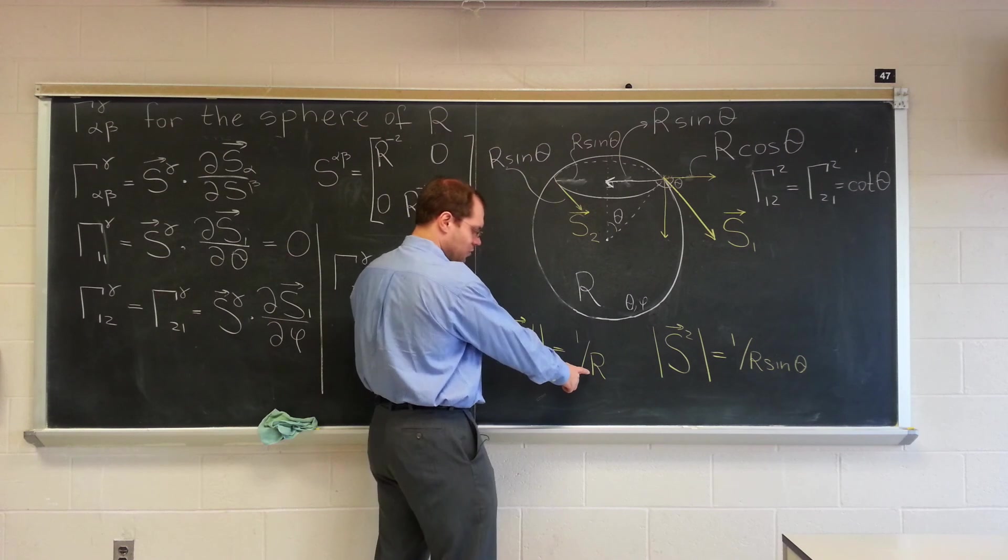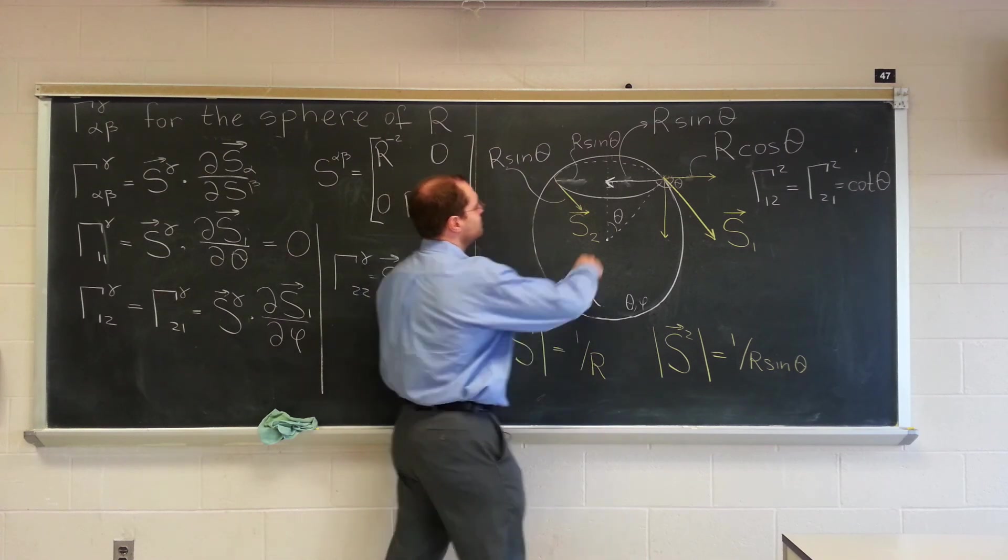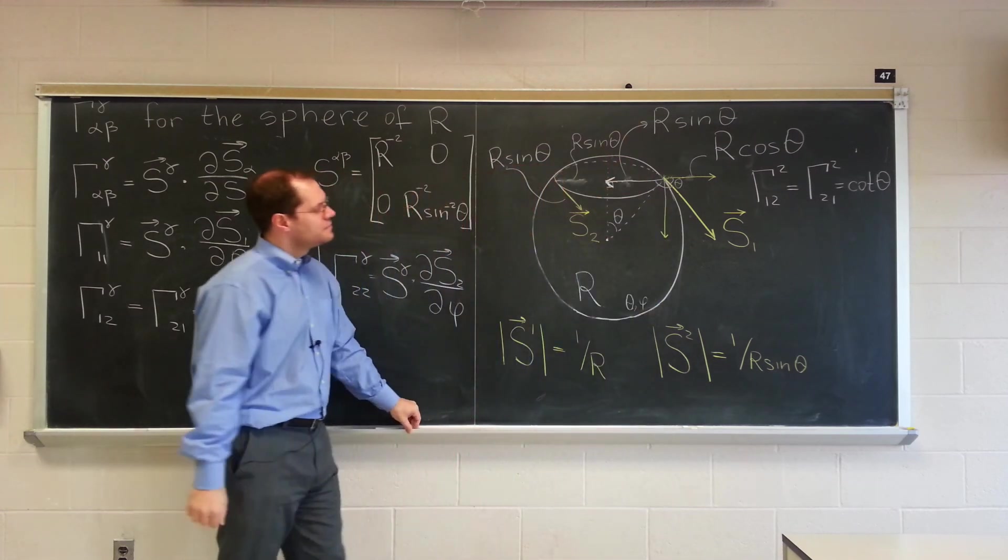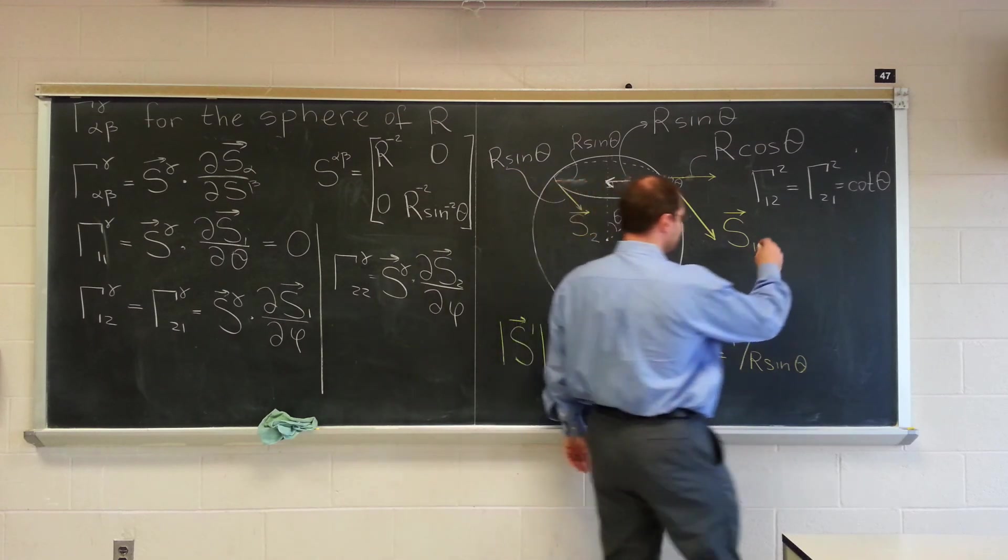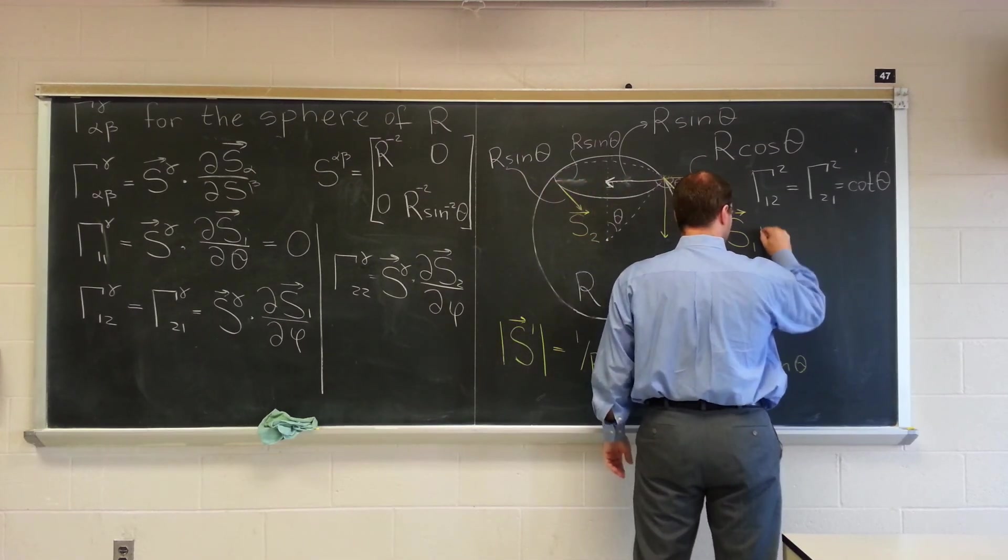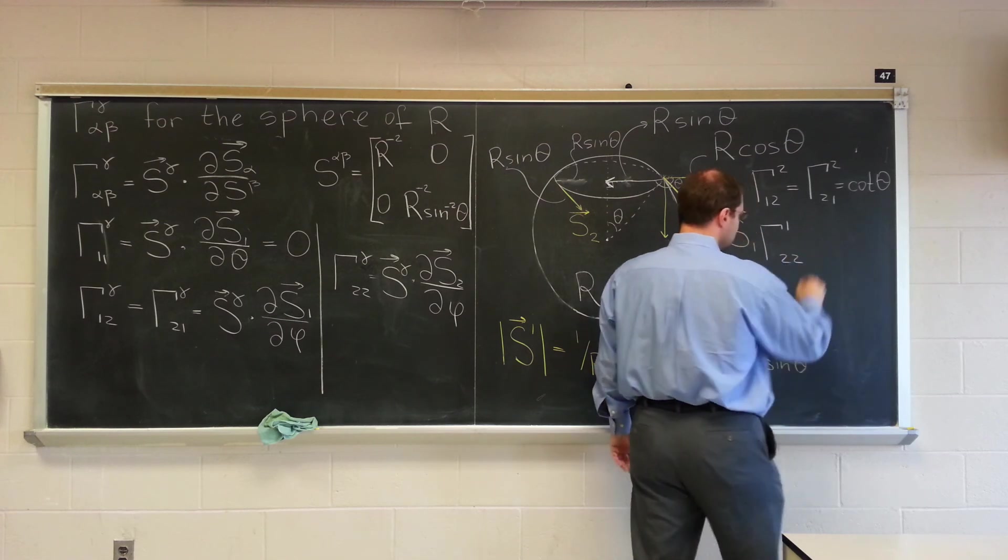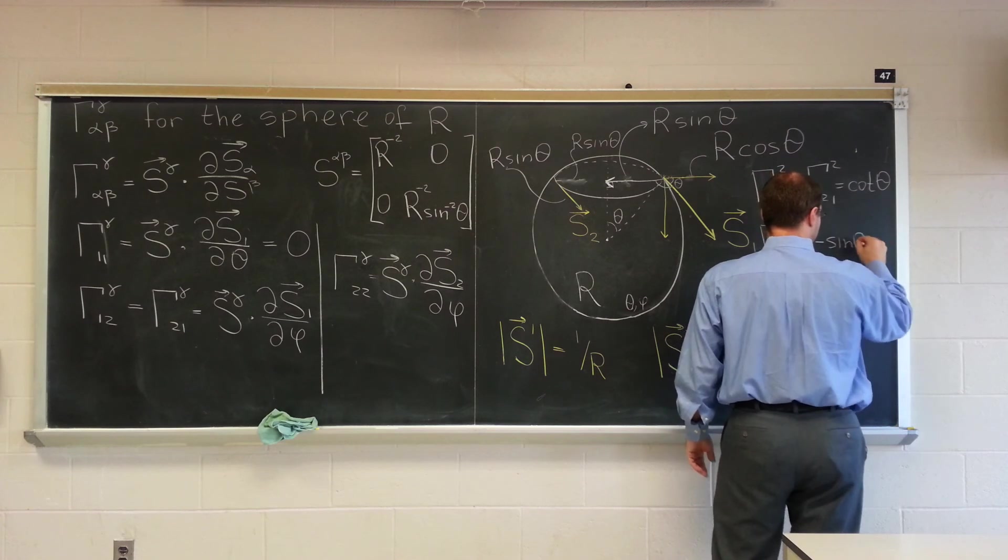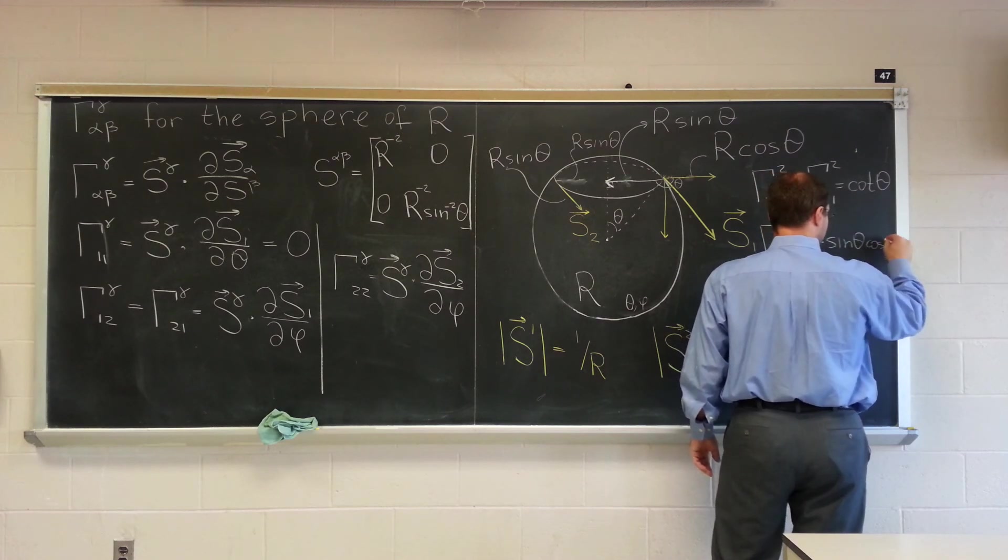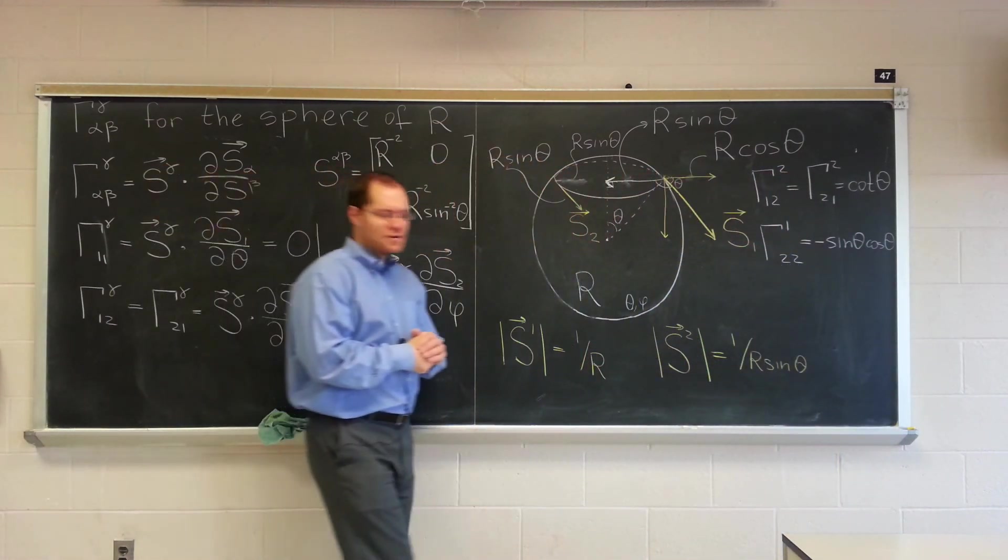It's something of length 1 over R, the vector of length 1 over R, times the vector of length R sine theta. So we have sine theta times the cosine of the angle with a minus sign. So minus cosine theta. So gamma 1, 2, 2 is minus sine theta cosine theta.